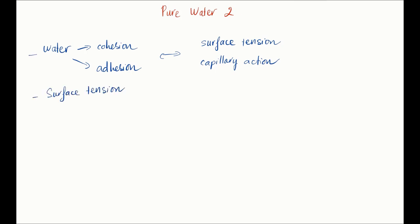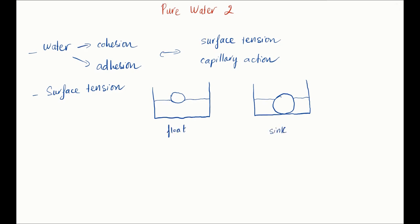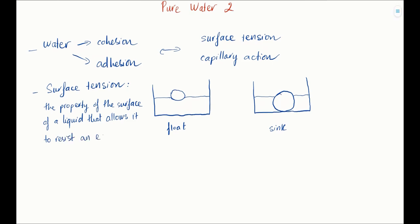Surface tension can be easily observed by putting an object on a water surface and watching it float. If the object is too heavy, it sinks. Surface tension is the property of the surface of a liquid that allows it to resist an external force.